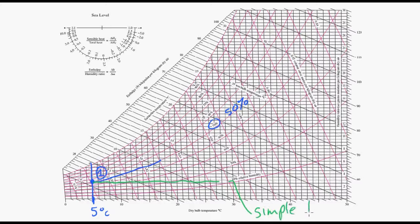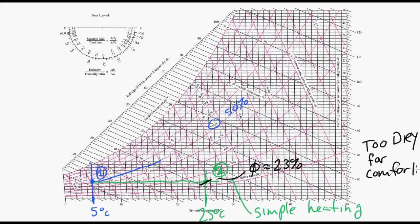And we go to 25 degrees Celsius. So we'll draw a vertical line at the 25 degrees Celsius. That intersection is our outlet point. And if we look at what the relative humidity is now at that outlet, that's well below 20 percent. That's maybe about 23 percent relative humidity. That's a bit too dry for human comfort. So we need to add some kind of humidification process.